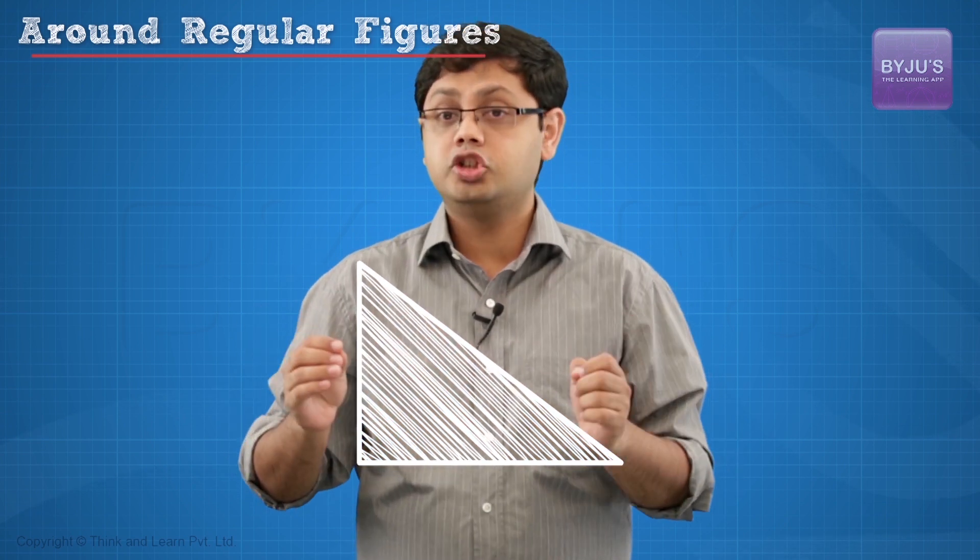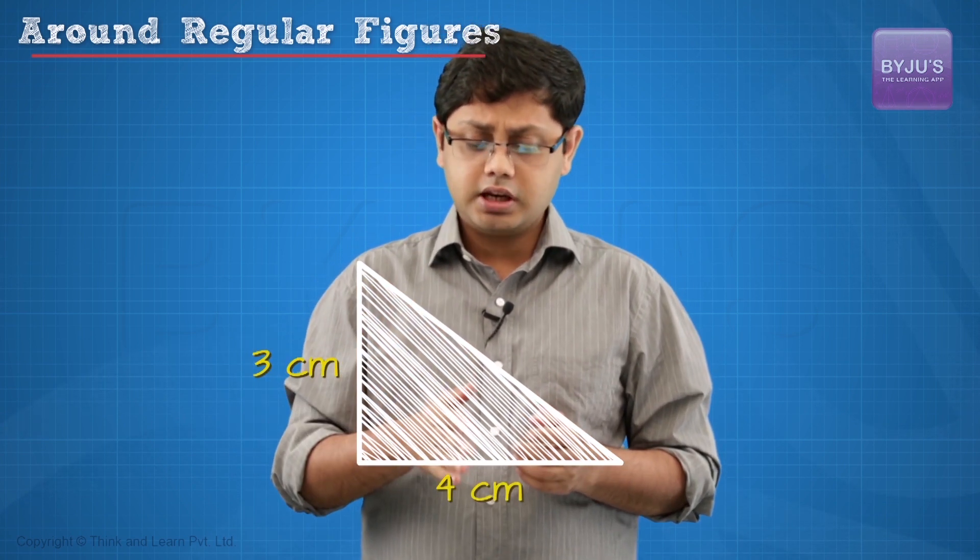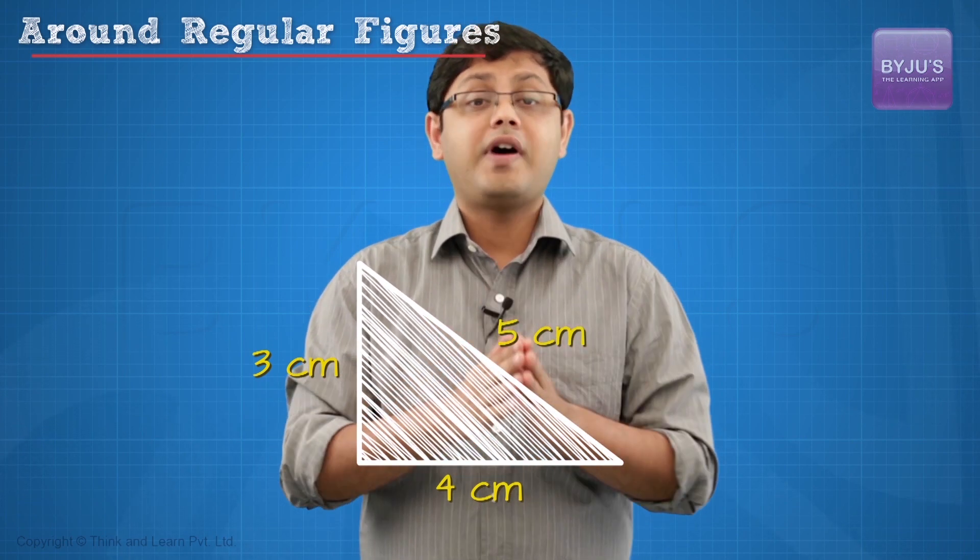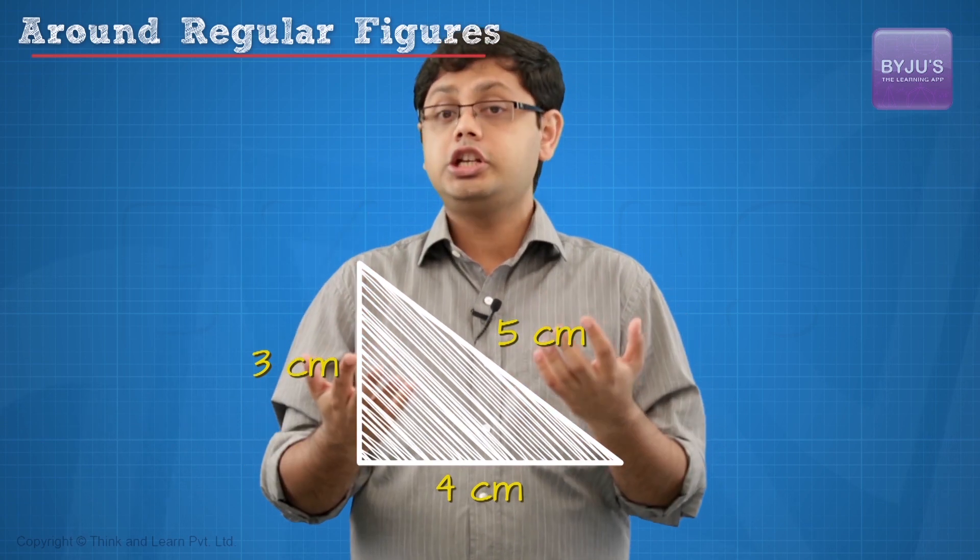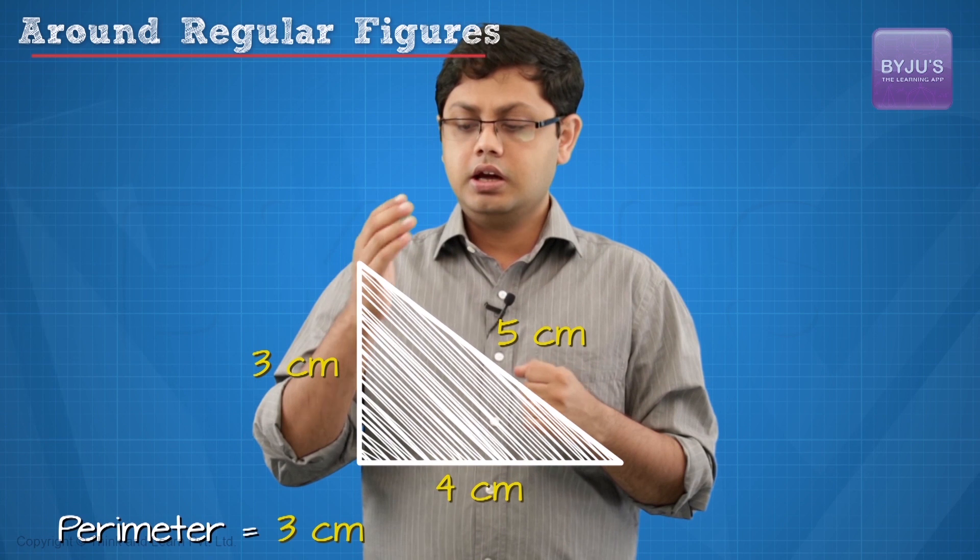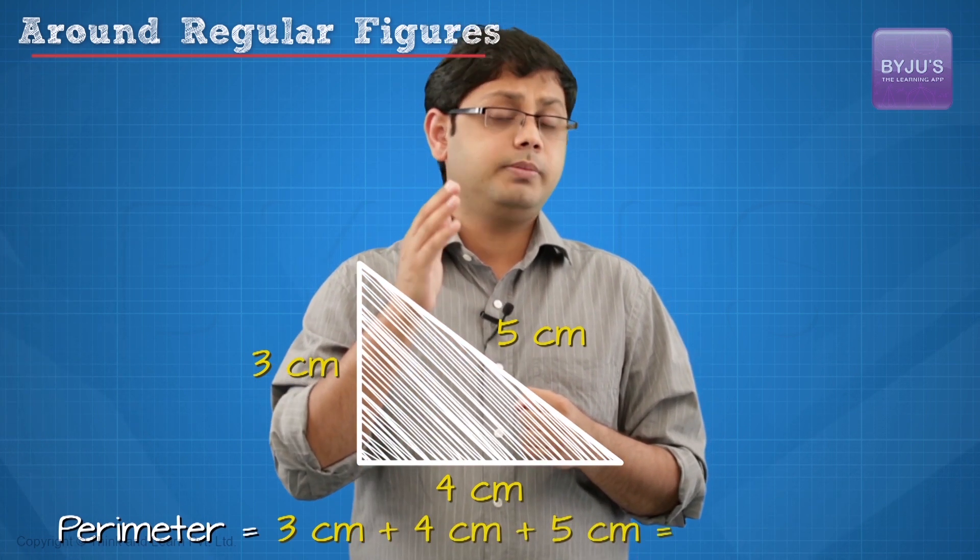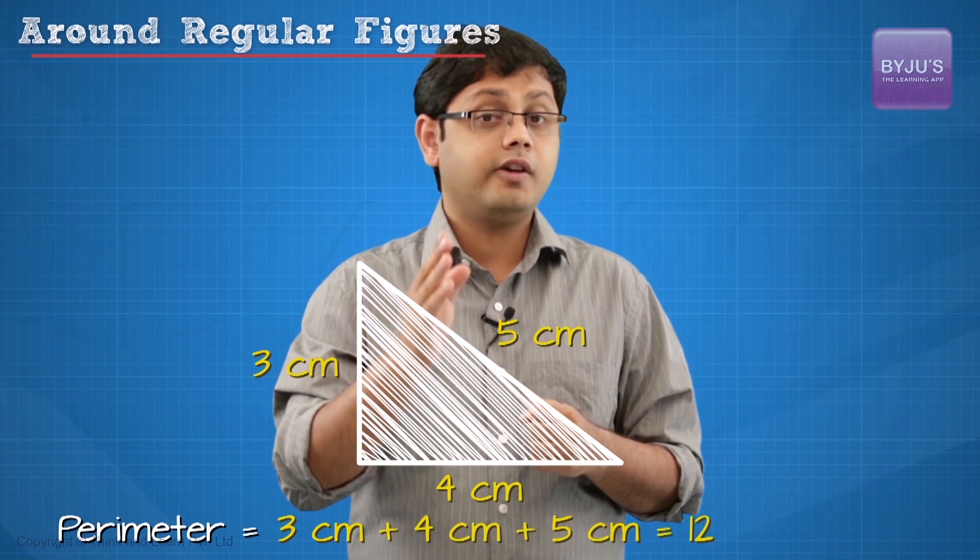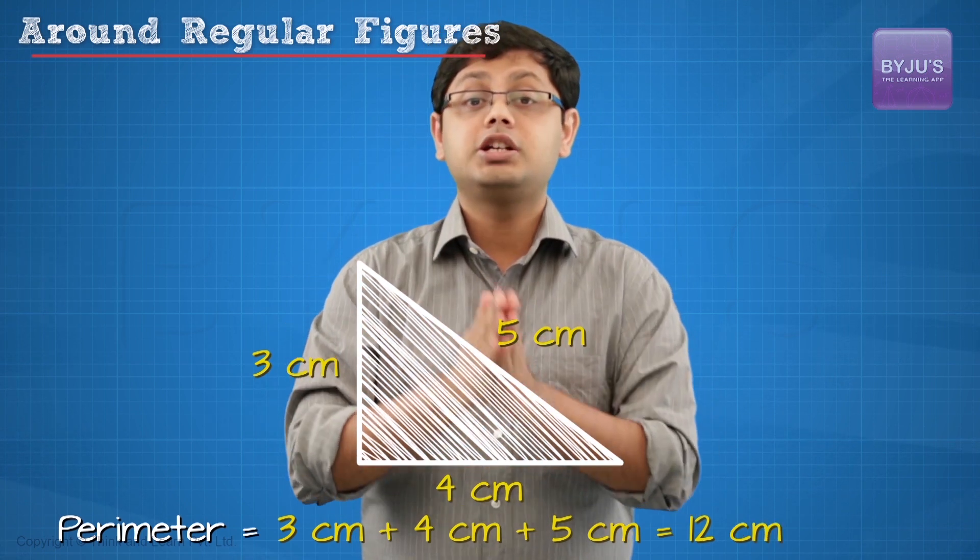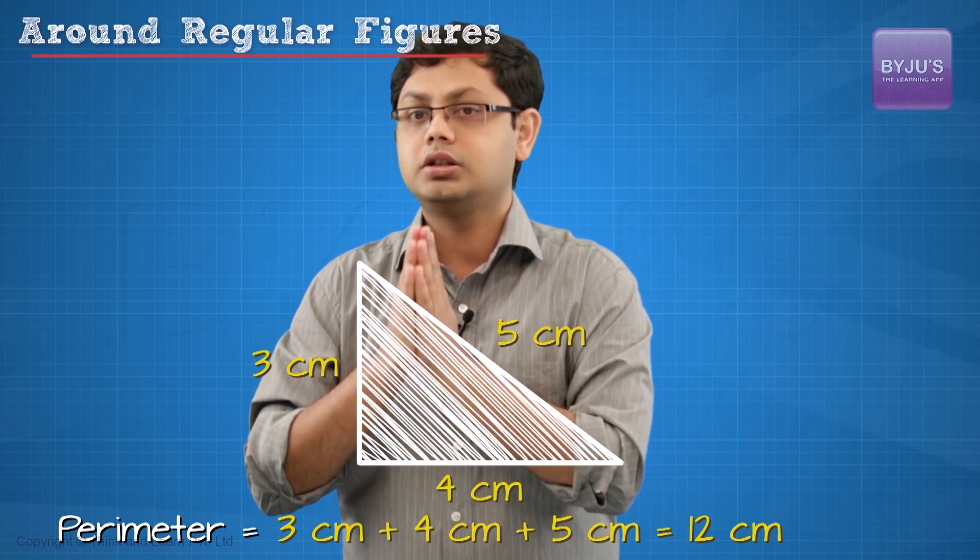The first polygon that we are going to be trying out is going to be a triangle. This triangle has three sides that are different from each other like 3 cm, 4 cm and 5 cm. Now, to find the perimeter of this triangle, all that we will need to do is to sum up all these sides. That's going to be 3 plus 4 plus 5 and that will be 12 cm. Always remember to write down the units along with the number.